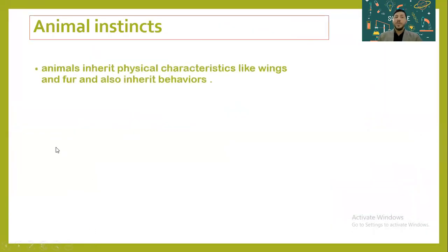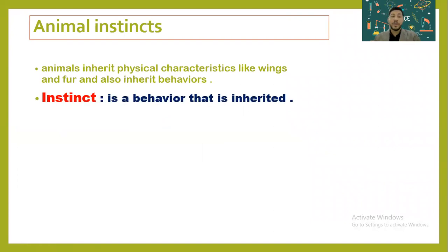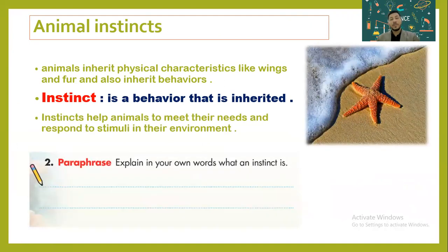Animal instinct. Animals inherit physical characteristics — like wings for birds, fins for fish, we inherit arms, eye color, hair color, skin color, being short or tall from our parents. But we not only inherit physical characteristics, we also inherit behaviors. Instincts are inherited behaviors. Instincts help the animal to meet what they need or to respond to their stimulus in different ways.